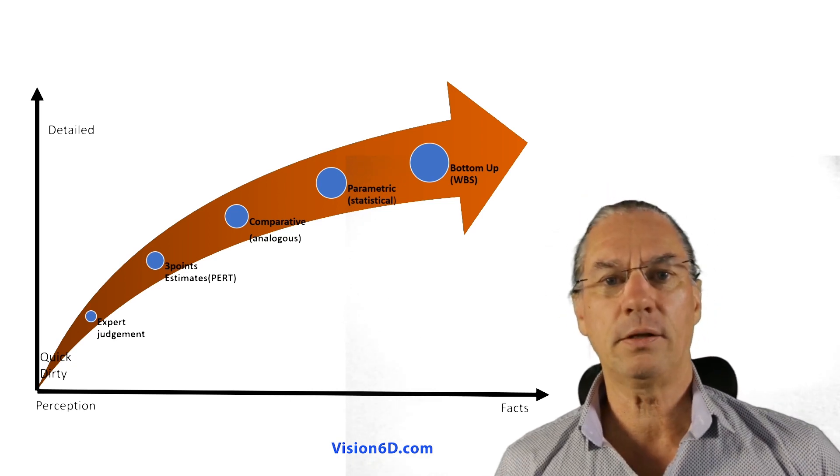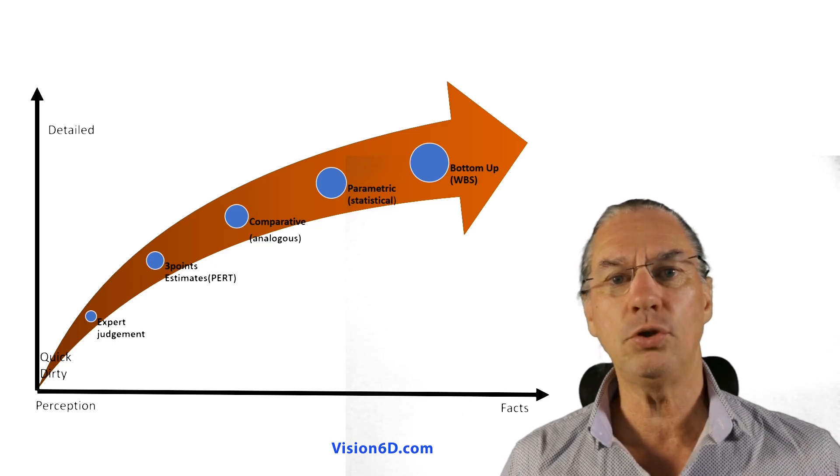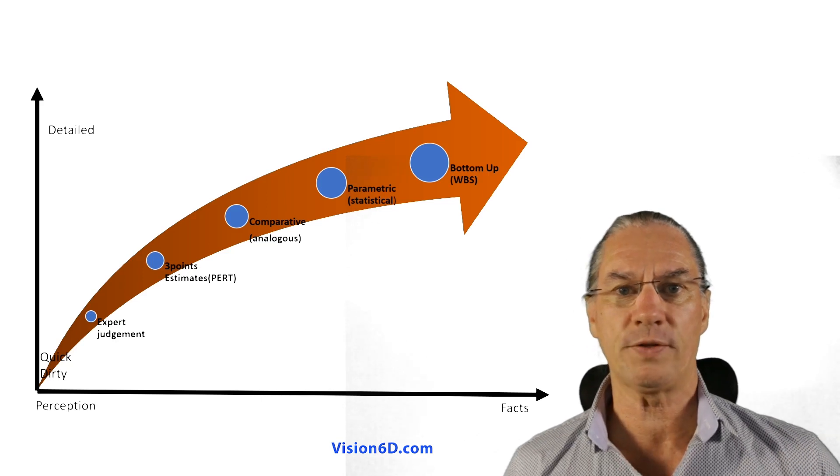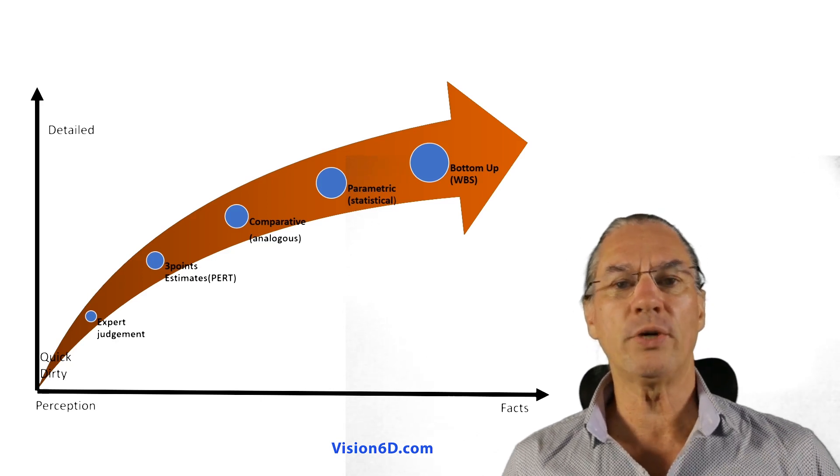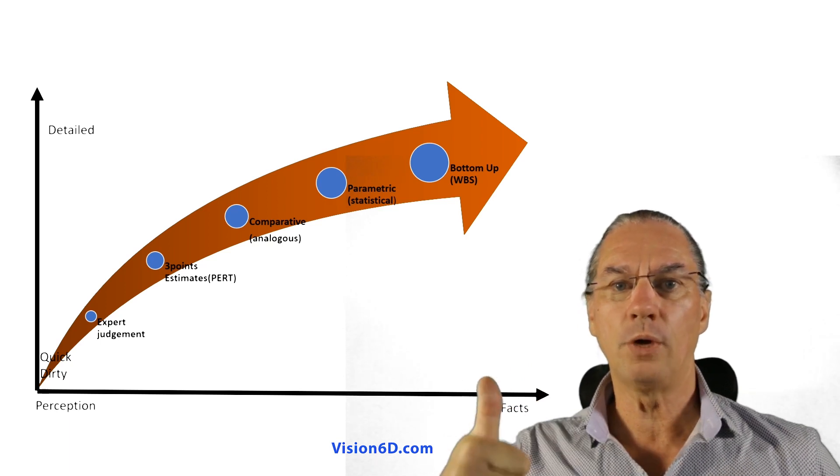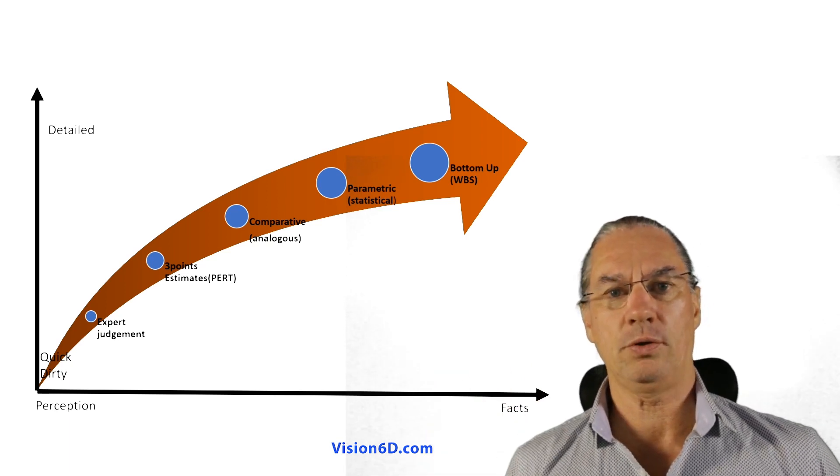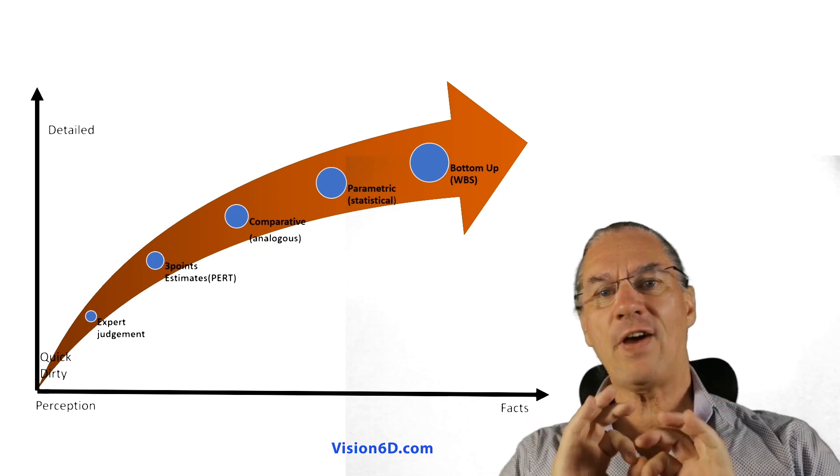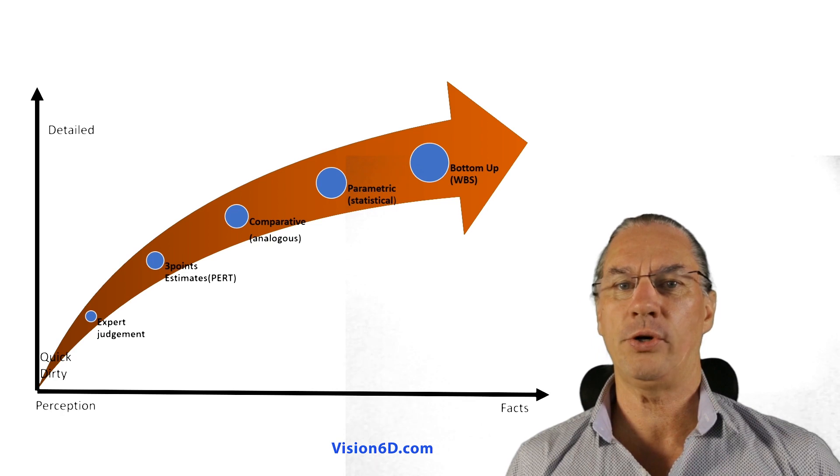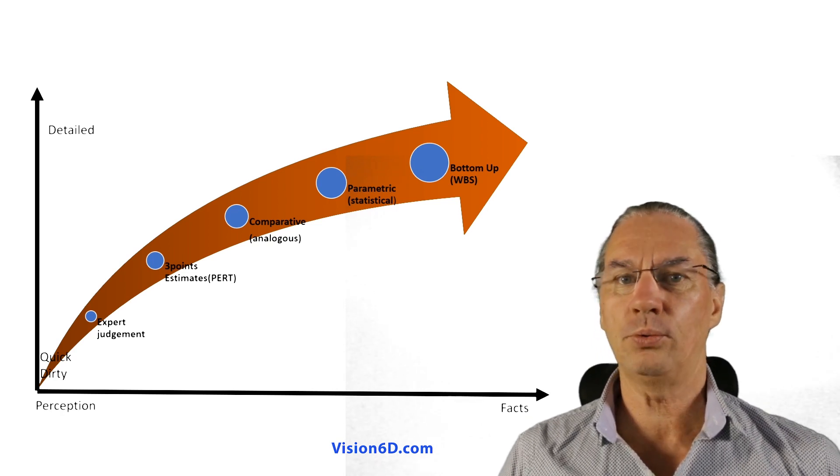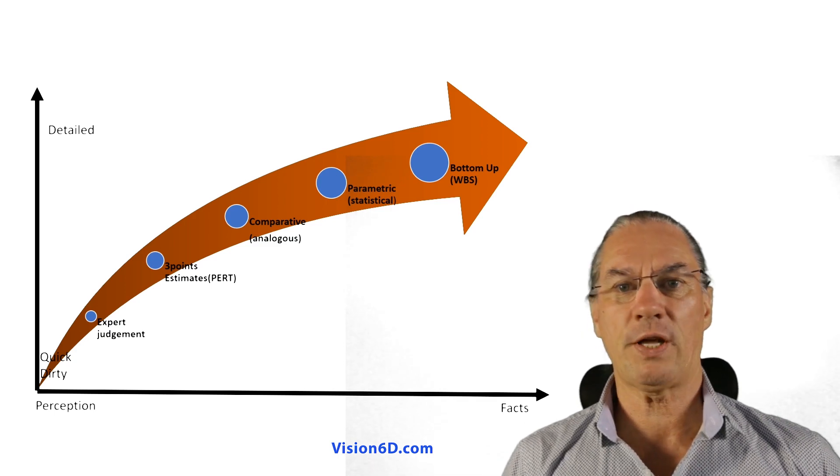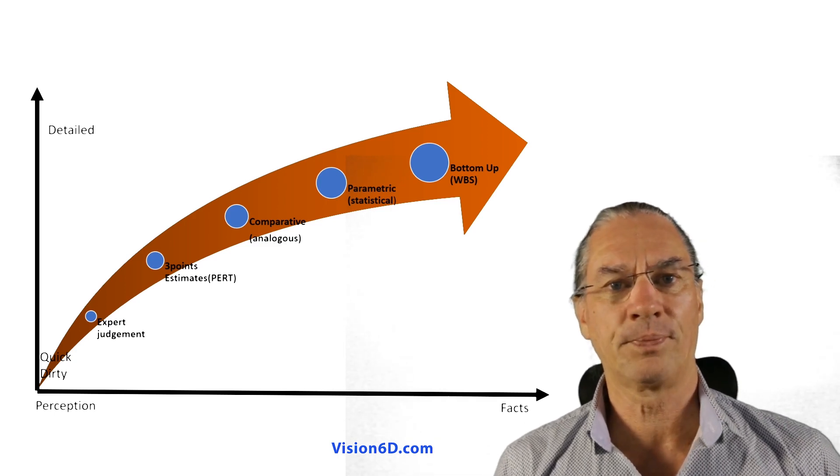The second method, which is the one that I see used by teams for software development or for many other projects, it's based on three different estimations. First, we do an optimist estimation. That is to say, if everything is going well into the project, how long is it going to last? For example, we can say, okay, it's going to last three months for the construction of the house.